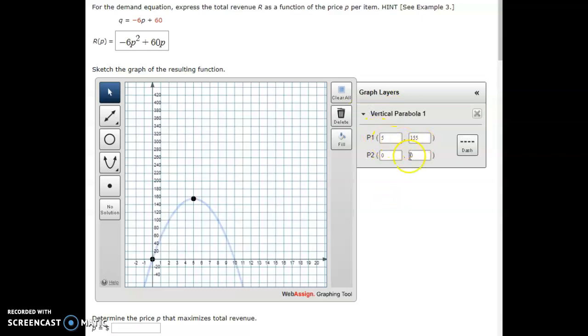And now notice, here's my two data points I was trying to get. Hey, at least I got one of them, right? I got the 0, 0, right. But the 5, 155 is off a little bit. I don't want 155. I just want 150.